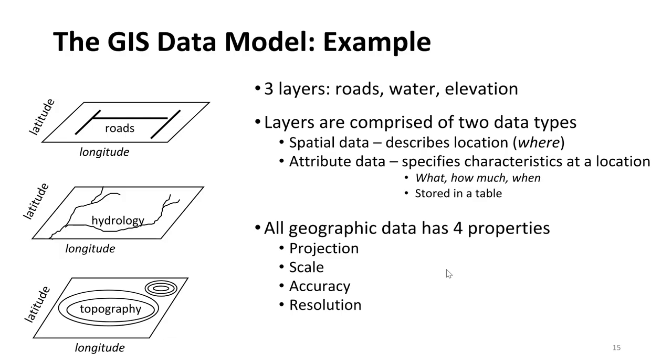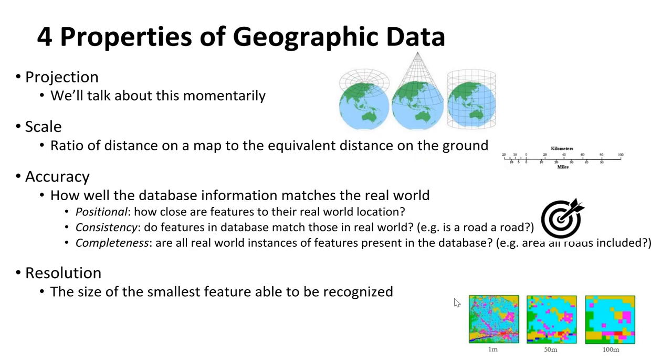All geographic data has four properties: it has a projection, which we'll talk about in a minute, a scale, accuracy, and resolution. A projection - we'll talk about this in more depth momentarily - is really just how we project this information, taking a 3D surface and putting it onto a 2D surface in our GIS. The scale is the ratio of distance on a map to the equivalent distance on the ground. For instance, if our road is 500 meters long, what will this be represented in on our map? Our road might be 5 centimeters long, and this 5 centimeters might represent a 500 meter road.